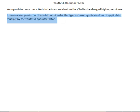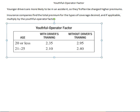In your textbook, you'll see some standard youthful operator factors. On the left you see age 20 or less, and 21 to 25, and then across the top, whether they've had driver's training or they haven't. So what this means is if they're under the age of 25, they're going to be charged some youthful operator factor, and once they're past age 25, it no longer applies.